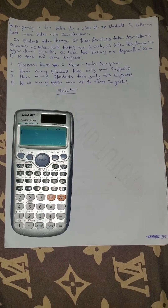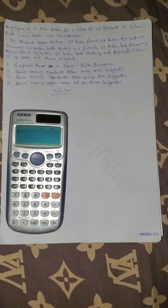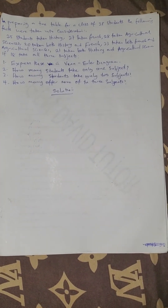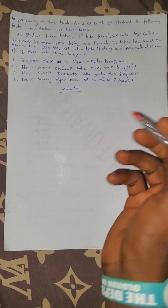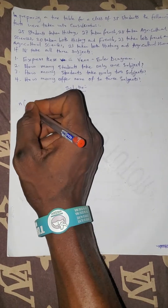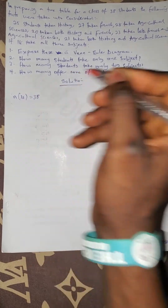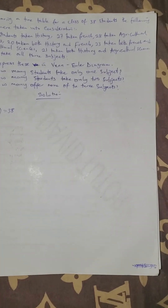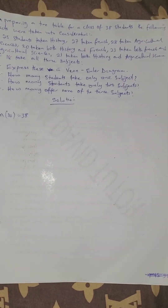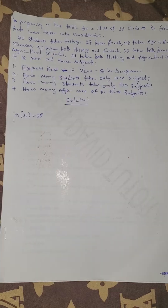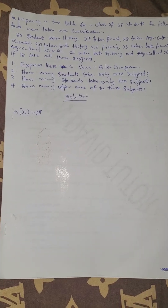This video solves a question on set theory. The question is: in preparing a timetable for a class of 38 students, the following facts were taken into consideration. The universal set is 38.